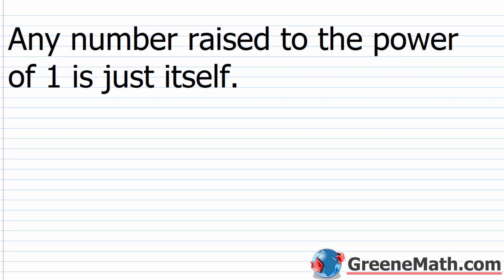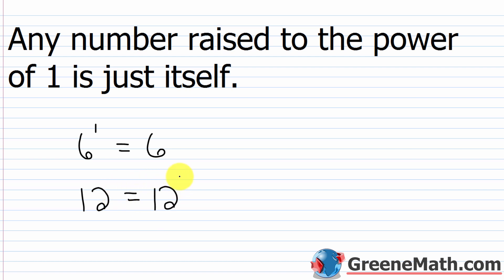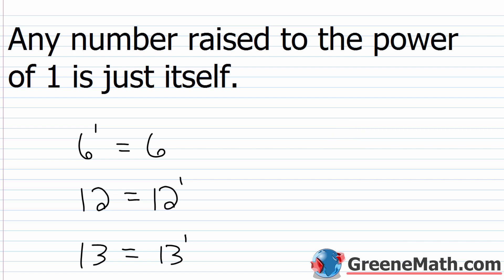Any number raised to the power of 1 is just itself. So if I have 6 raised to the power of 1, the answer is just 6. Or flipping that: if I want to write 12 in exponent form, I take 12 as the base and write 1 as the exponent. So if you have a number like 13 and want to write it in exponent form, write the number as the base and put a 1 as the exponent. We'll cover the rule for exponent 0 later on.